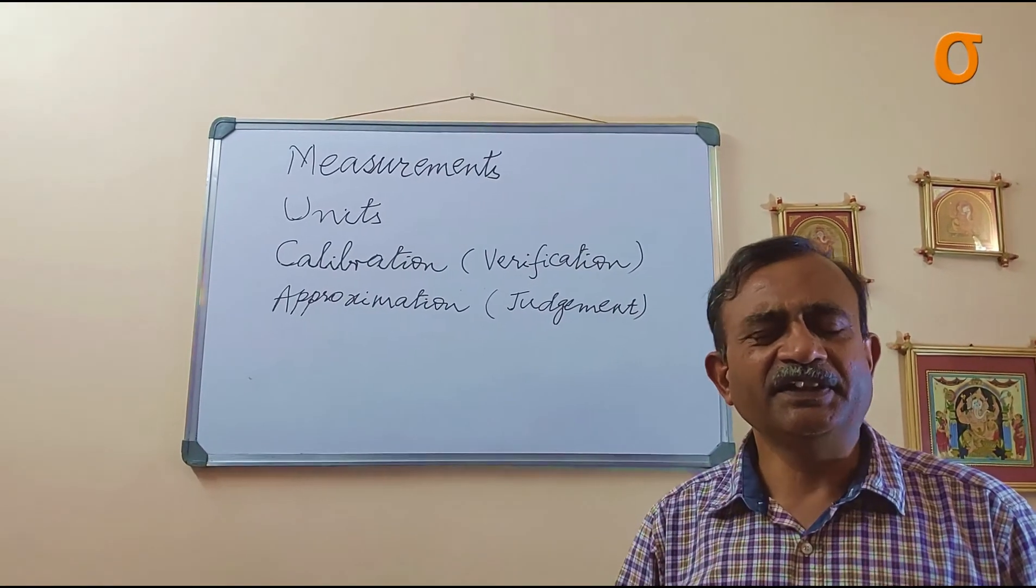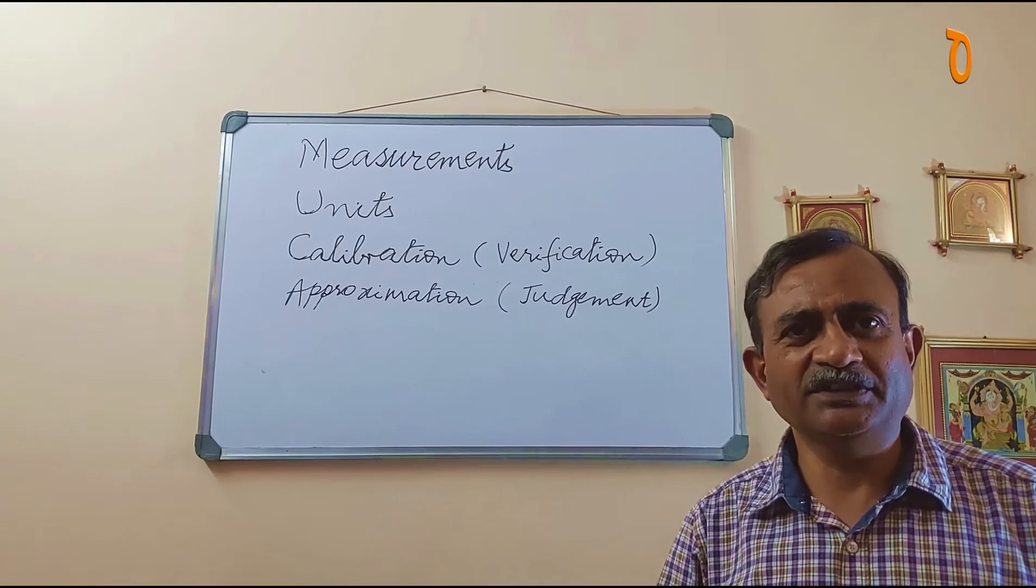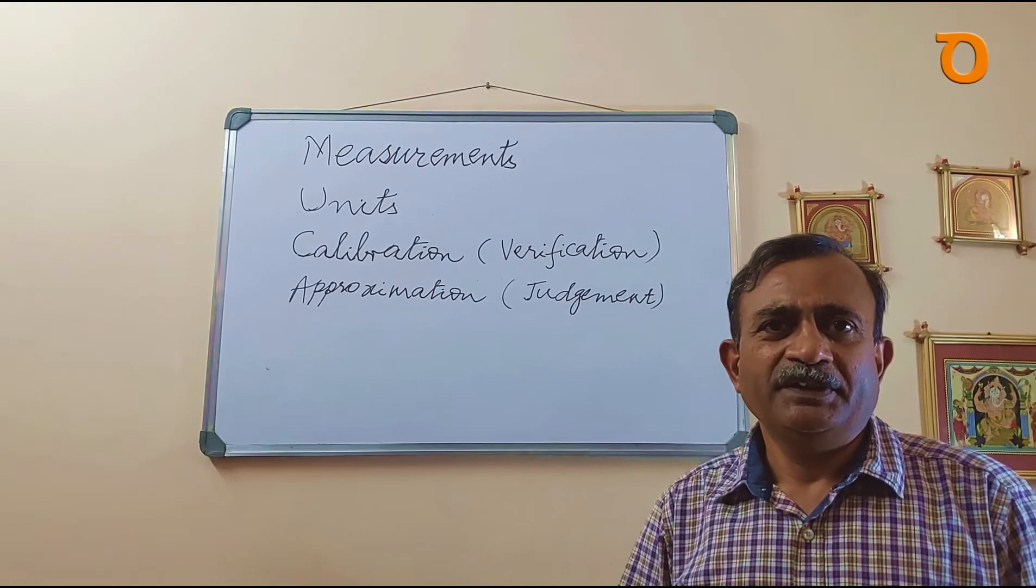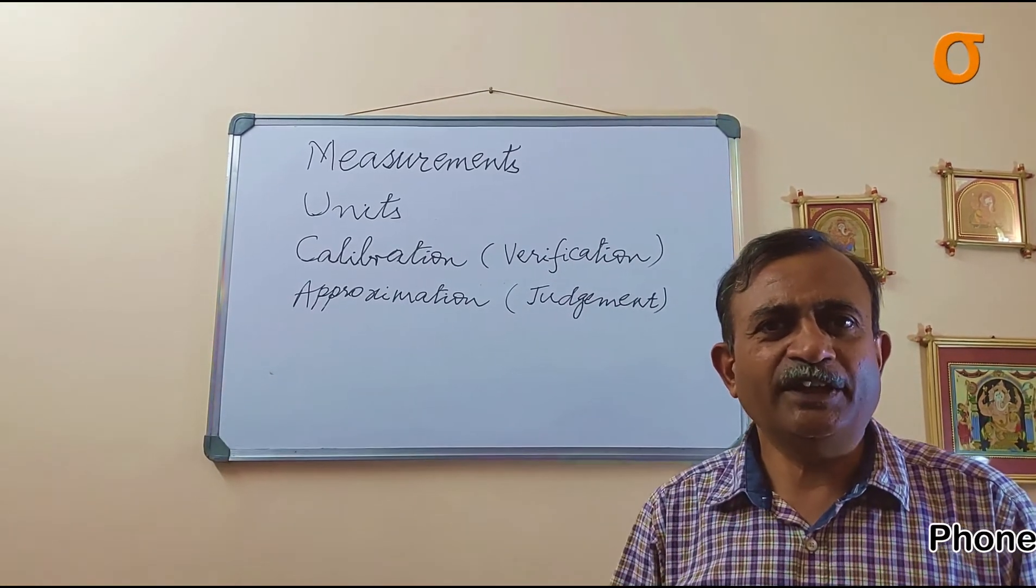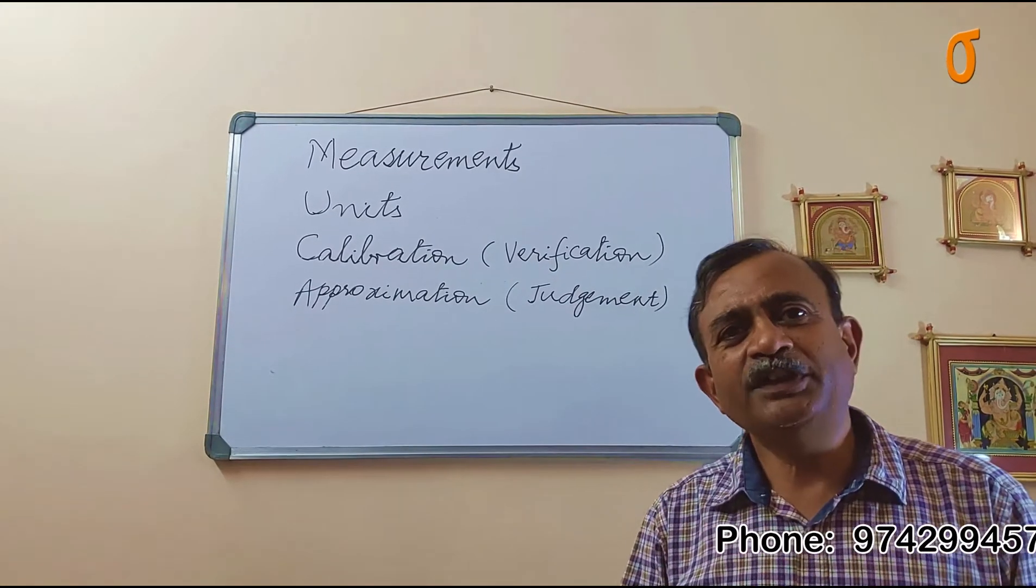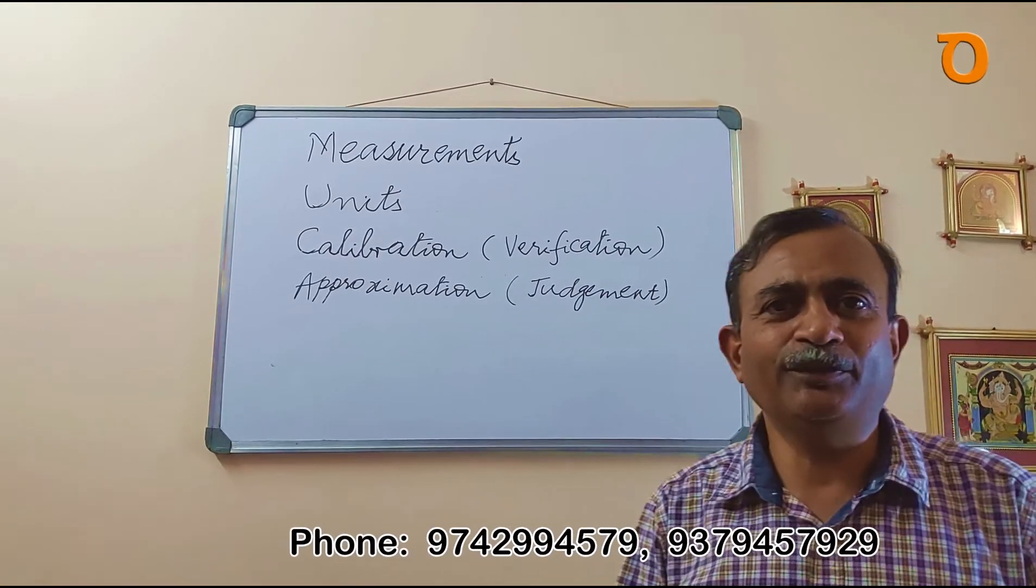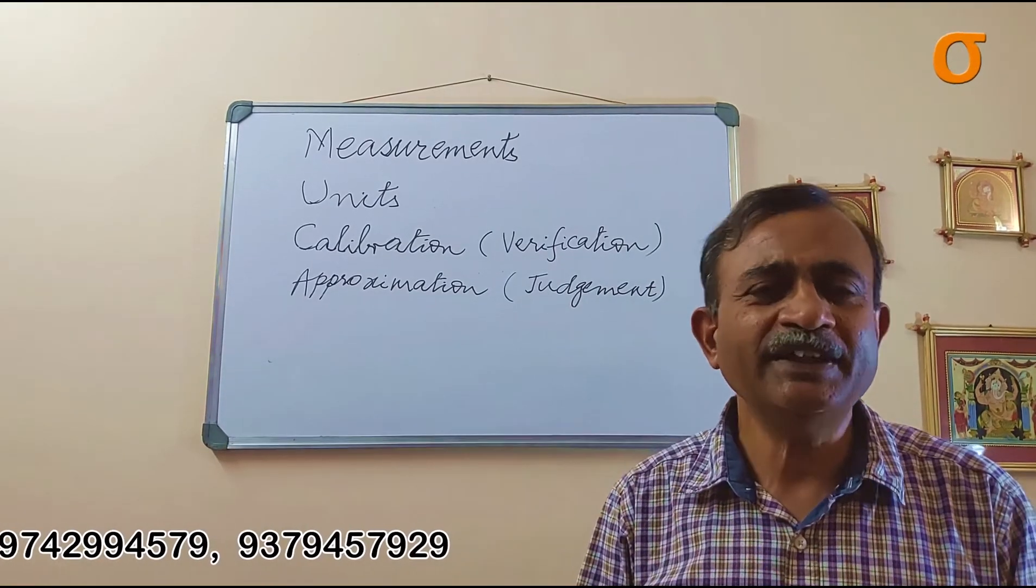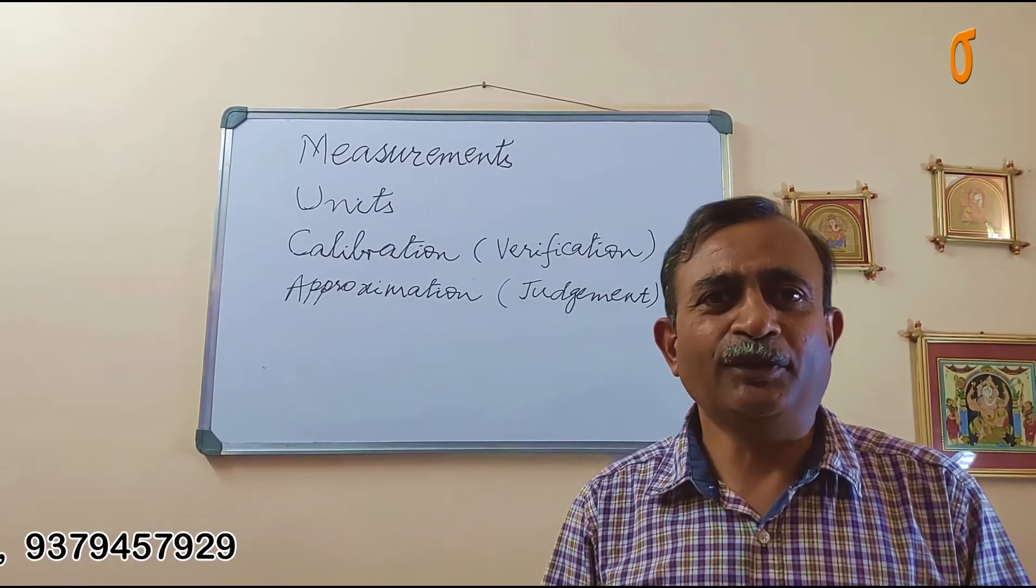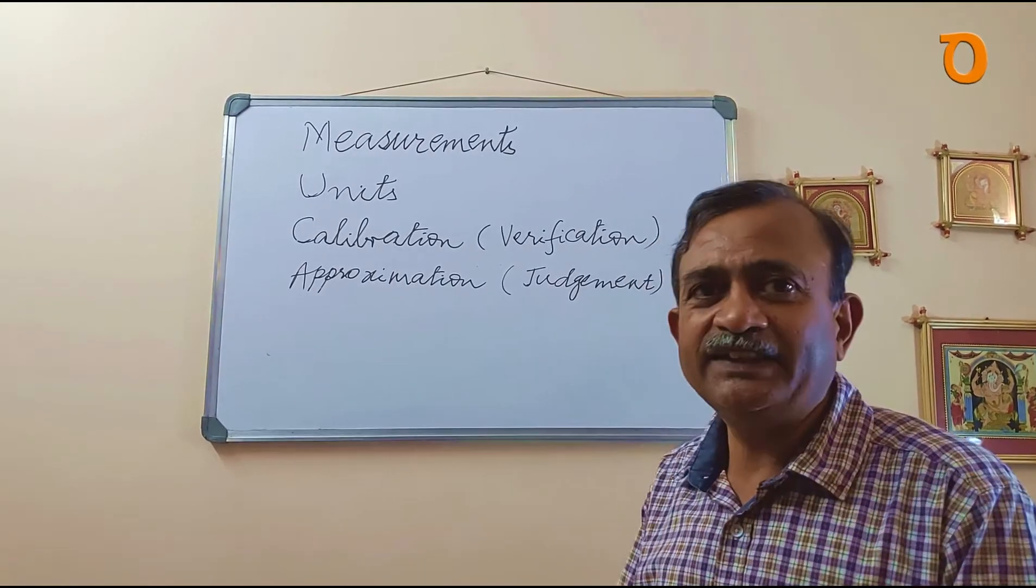Friends, there is nothing perfect in this world. There is nothing which is 100 percent accurate. We all work on approximations. Whether your mobile phone is giving the time or whether the ordinary clock is giving the time, the only difference is the mobile phone time is more accurate than the time given by the clock which is hanging on my bedroom wall. So this degree of accuracy is the only thing which varies.